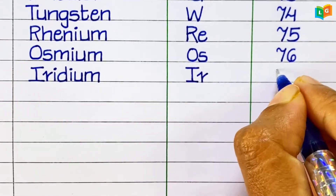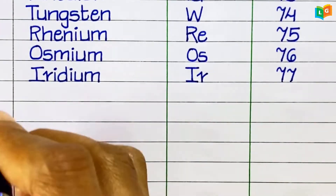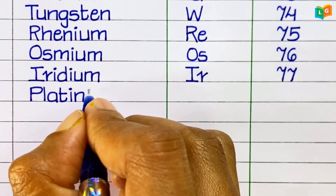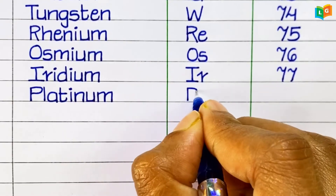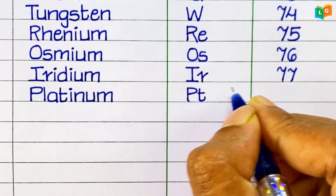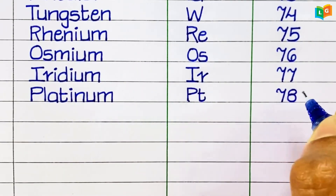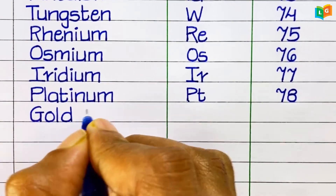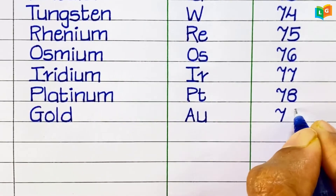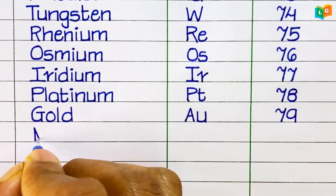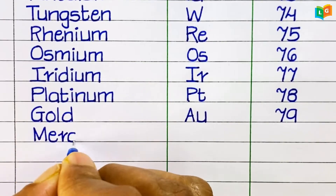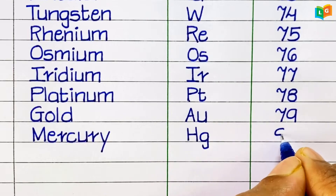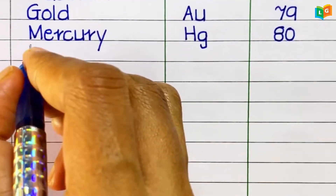Iridium, symbol Ir, atomic number 77. Platinum, symbol Pt, atomic number 78. Gold, symbol Au, atomic number 79. Mercury, symbol Hg, atomic number 80.